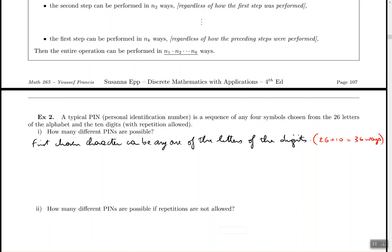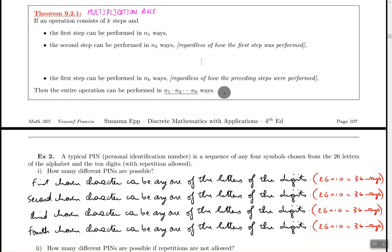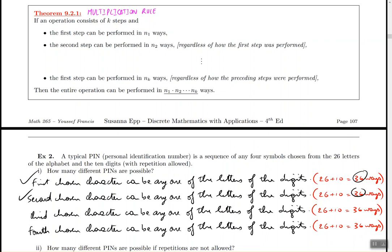Now, since repeat is allowed, the second chosen character and the third and the fourth can also be the same exact thing. So I wrote the same sentence four times in a row. Even though that's kind of silly, I shouldn't be doing that. But I just want to show you how this relates to the theorem. So basically my first step is this one, choosing the first character. It can be done in 36 different ways. My second step is choosing the second character and it can also be done in 36 ways. The third step, the fourth step and so on.